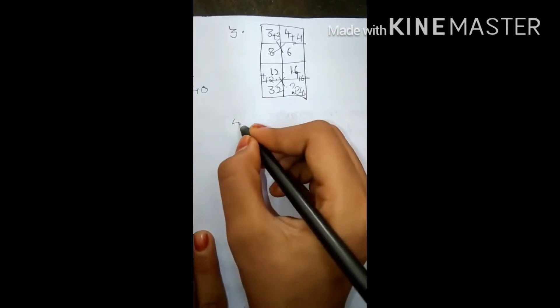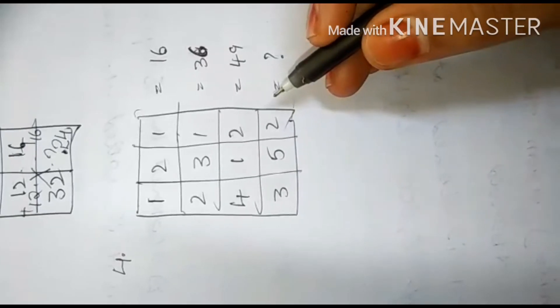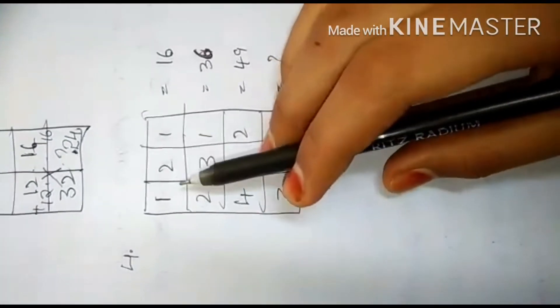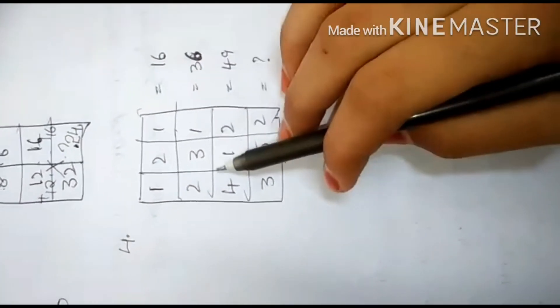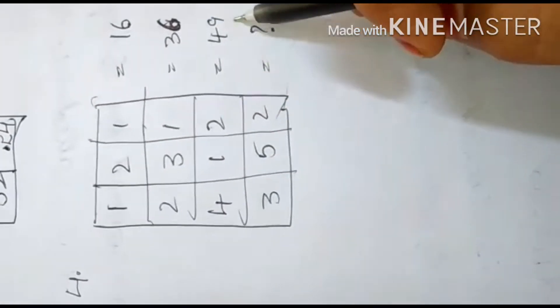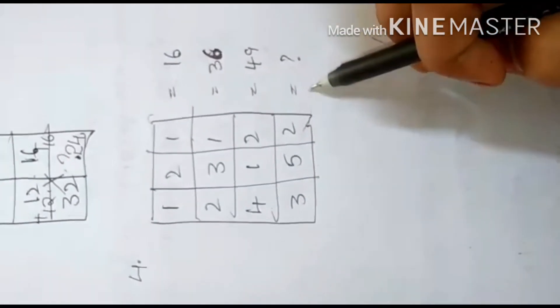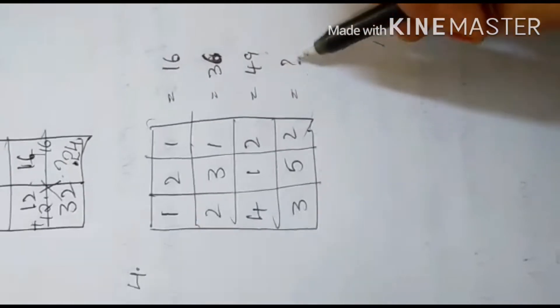And our fourth puzzle is, our fourth question is, see here, 1, 2, 1 equals 16. 2, 3, 1 equals 36. 4, 1, 2 equals 49. 3, 5, 2 equals question mark. We should find this, what is this?